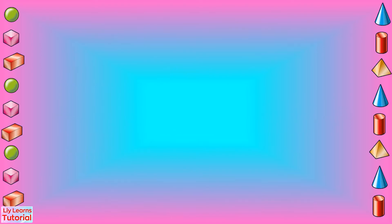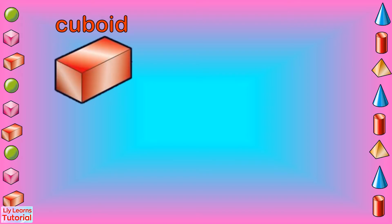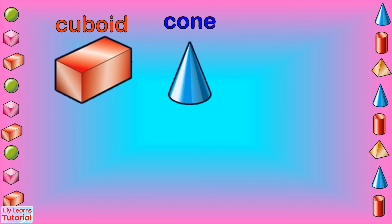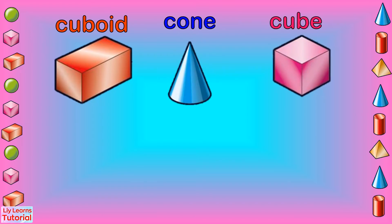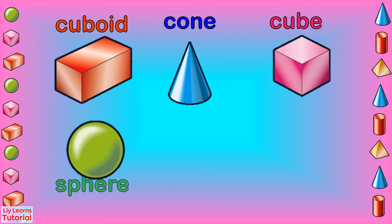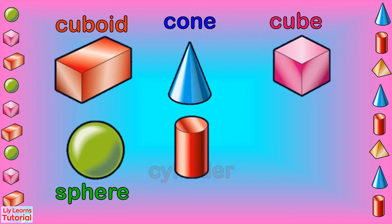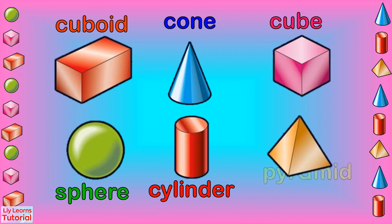Let's take a look at the different 3D shapes one more time: cuboid, cone, cube, sphere, cylinder, pyramid.